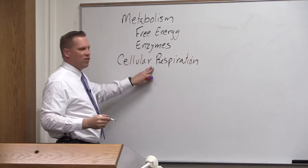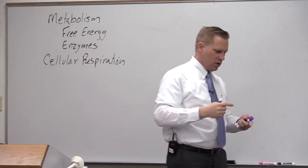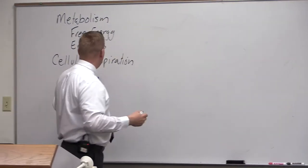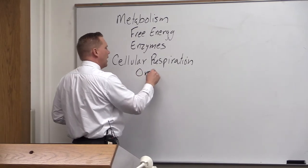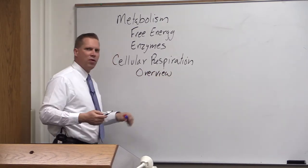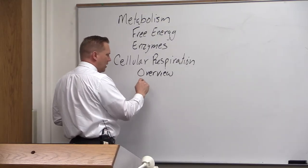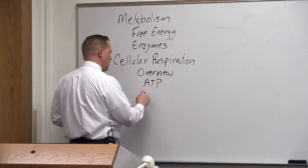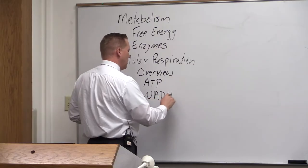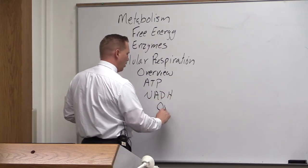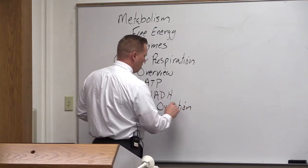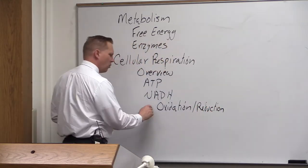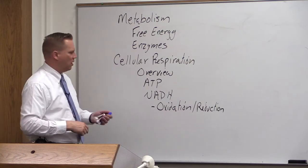In cell respiration we're going to be going over glycolysis, the citric acid cycle, the electron transport chain, and oxidative phosphorylation. We'll give you a little bit of an overview today. An important part of cell respiration involves two key molecules: ATP and its recycling, and NADH, which involves a type of reaction called an oxidation reduction reaction. We're going to finish up the day talking about oxidation and reduction.